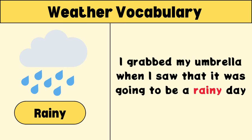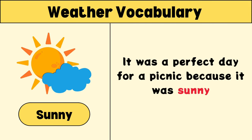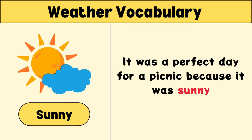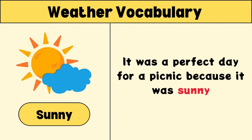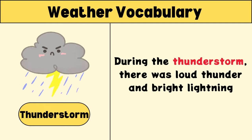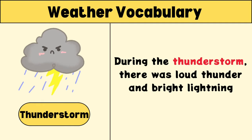Rainy: I grabbed my umbrella when I saw that it was going to be a rainy day. Sunny: it was a perfect day for a picnic because it was sunny. Thunderstorm: during the thunderstorm, there was loud thunder and bright lightning.